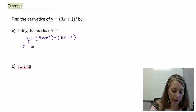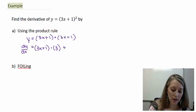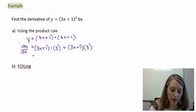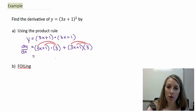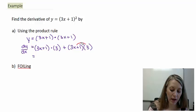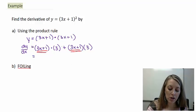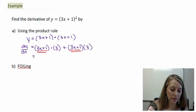The product rule then: my derivative is the original of the second times the derivative of the first, which is just 3, plus the original of the first — (3x + 1) — times the derivative of the second, which is just 3. Then to simplify, we can distribute and combine like terms. We notice that we have 3 times (3x + 1) and 3 times (3x + 1), so we just add the coefficients: 3 plus 3 gives me 6 times (3x + 1).